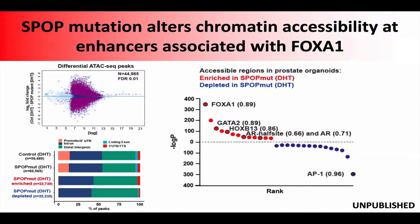Looking at these changed accessible regions, the dominant signal is FOXA1 motifs, suggesting that FOXA1 signaling is acting downstream of SPOP mutation to drive these accessibility changes and transcriptional changes. We've since gone to human tumors and seen a similar thing — there's a clear difference in FOXA1-driven chromatin accessibility and androgen receptor cistrome between SPOP mutant and SPOP wild-type tumors, consistent with what our model systems are showing us.